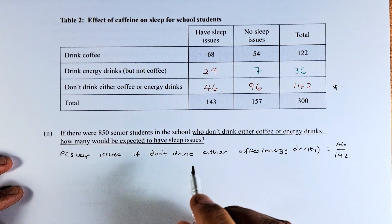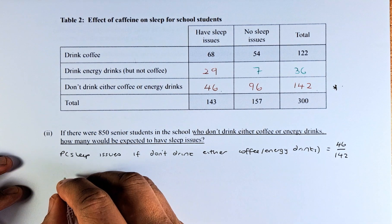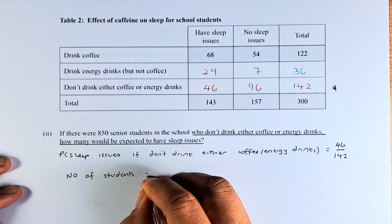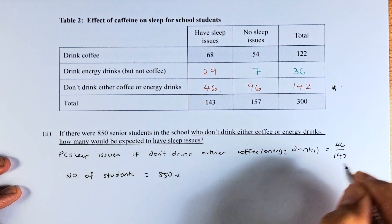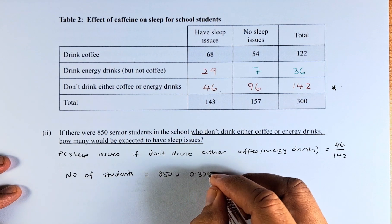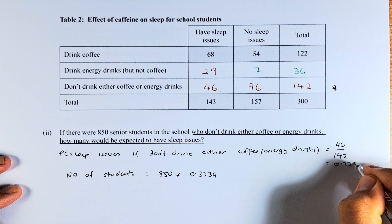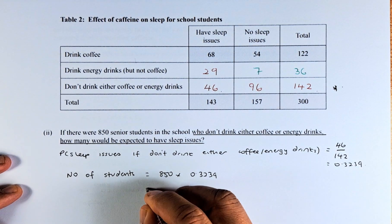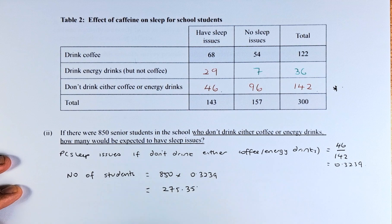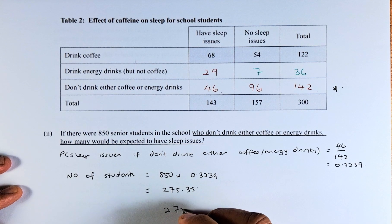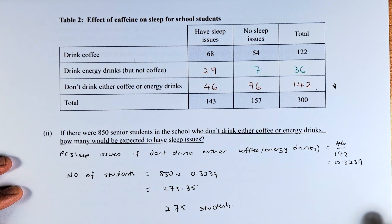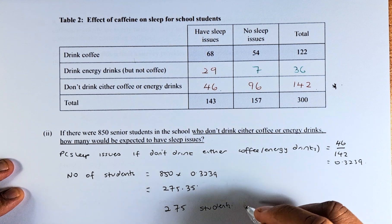To calculate how many students will have that problem: the number of students who have sleep issues equals 850 multiplied by 46 over 142, which is 0.3239. Putting that into the calculator, the answer is 275.35, so my answer will be 275 students who have sleep issues if they don't drink either coffee or energy drink.